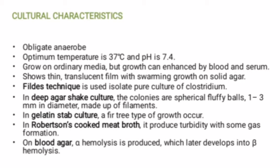In gelatin stab they form fir tree type growth with slow liquefaction. On Robertson's cooked meat medium they produce turbidity with some gas production. On blood agar they produce alpha hemolysis which later develops into beta hemolysis due to the production of a hemolysin known as tetanolysin. These are the cultural characteristics of Clostridium tetani.